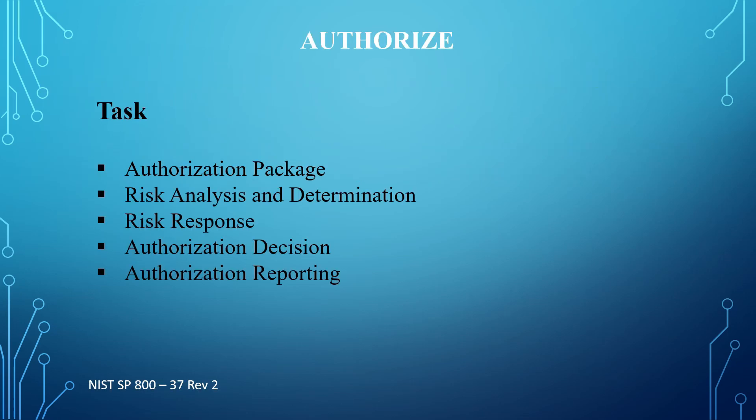The following tasks are associated with the Authorize step of the NIST Risk Management Framework. The first task is the authorization package. The system owner, in coordination with the ISSO and the assessor, assembles the authorization package and submits it to the authorizing official for an authorization decision. The authorization package includes the system security plan, the security assessment report, and the plan of action and milestones.